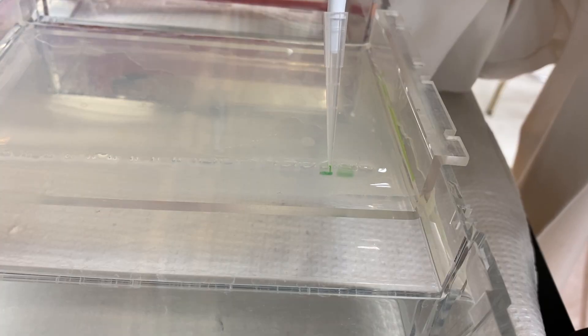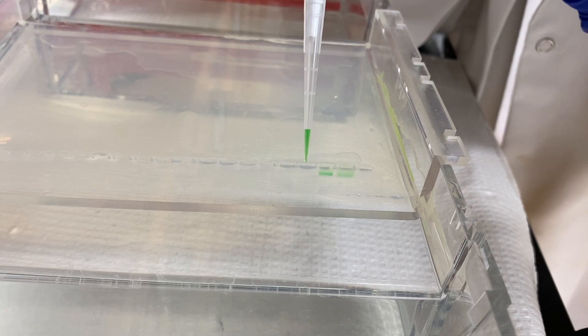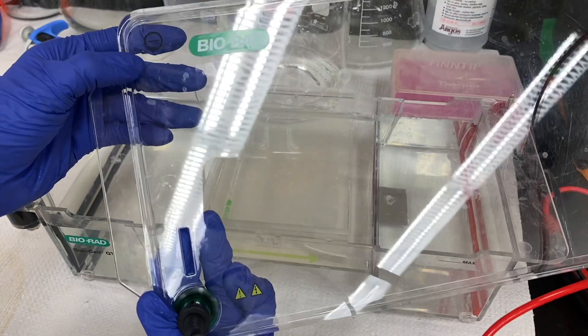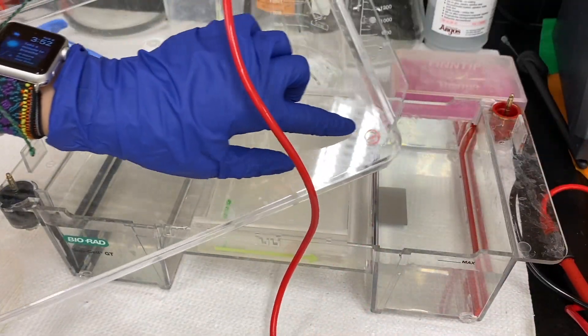I then load about 5 microliters of DNA sample into each of the separate wells, and then I'm ready to start the machine. Putting on the lid, it is important that I orient it with the negative end at the beginning and the positive end at the end.